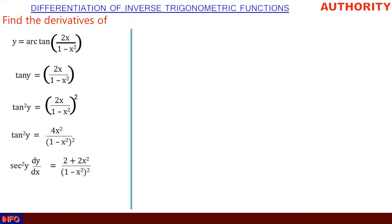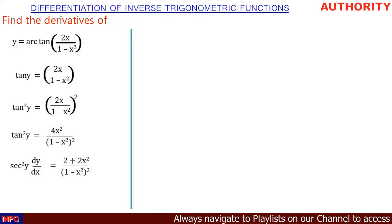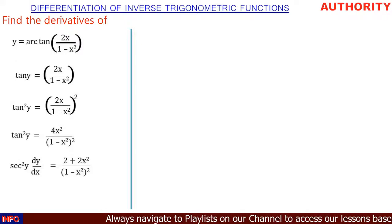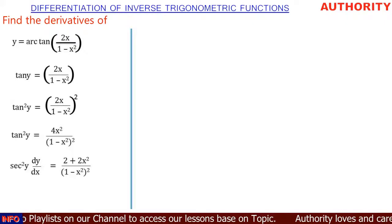Please use the quotient rule and differentiate 2x all over 1 minus x squared. After differentiation it is going to give you 2 plus 2x squared all over (1 minus x squared) squared. Now let's make dy/dx the subject.